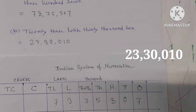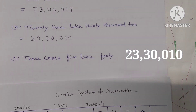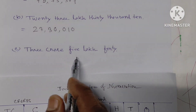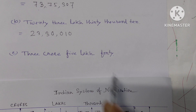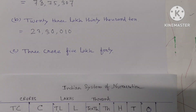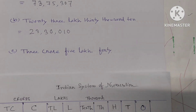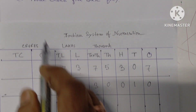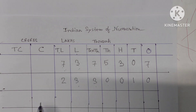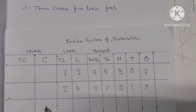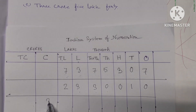Part (c): three crore five lakh forty. Let us write this in the chart. Three crore goes in the crore place.